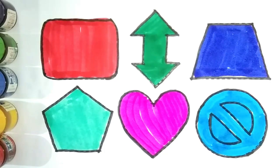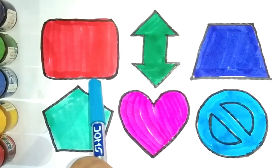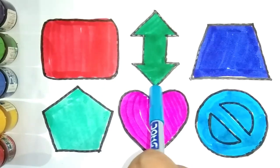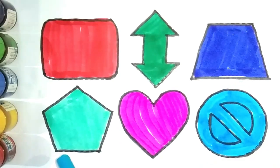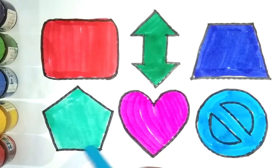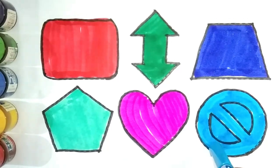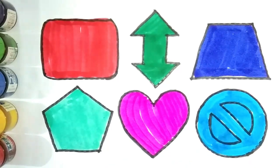Kids, this is a round rectangle. This is an up and down arrow. This is a trapezoid. This is a pentagon. This is a heart, and this is a no symbol. Thank you for watching our video — don't forget to like and subscribe to our channel!